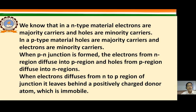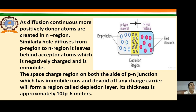When electrons diffuse from the n-region to the p-region, they leave behind positively charged donor atoms which are immobile. As diffusion continues, more positively charged donor atoms are created in the n-region.